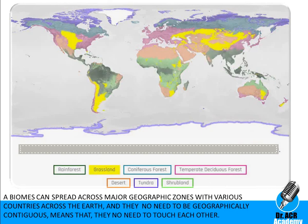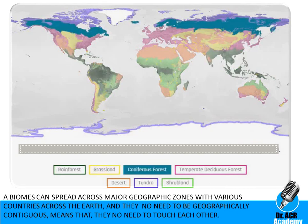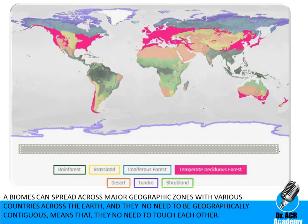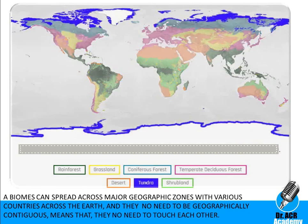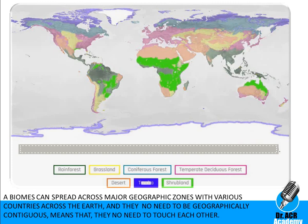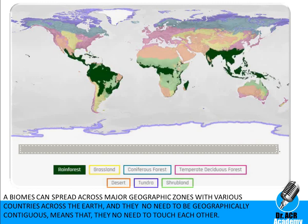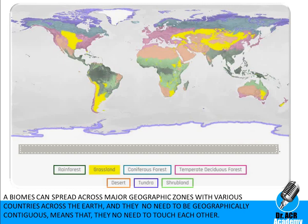Here you can see the different types of biomes: rainforest, grassland, coniferous forest, temperate deciduous forest, desert, tundra, and shrubland.